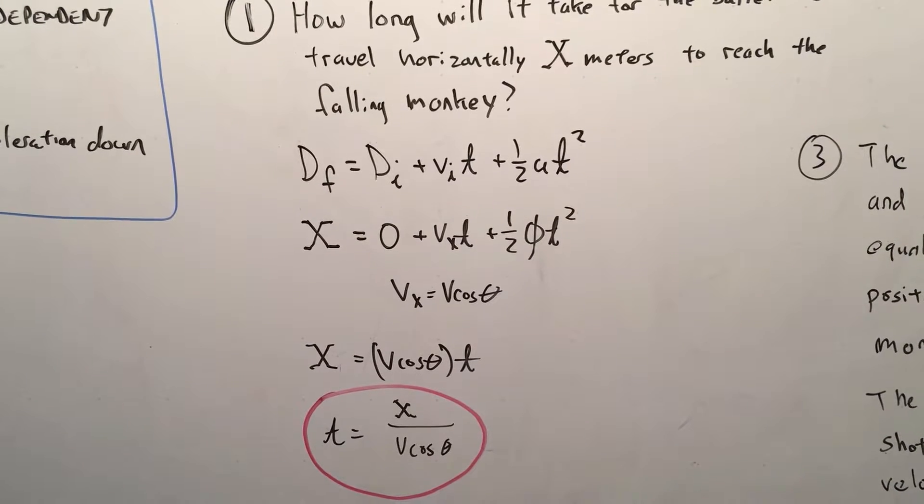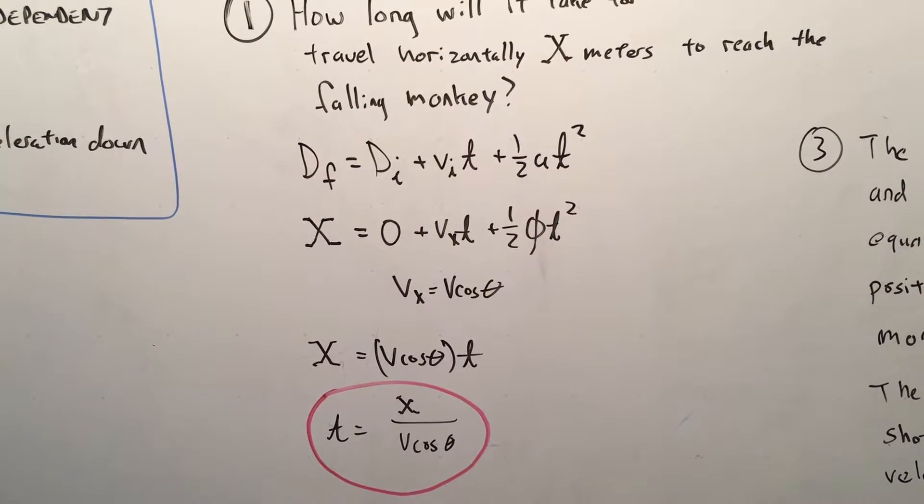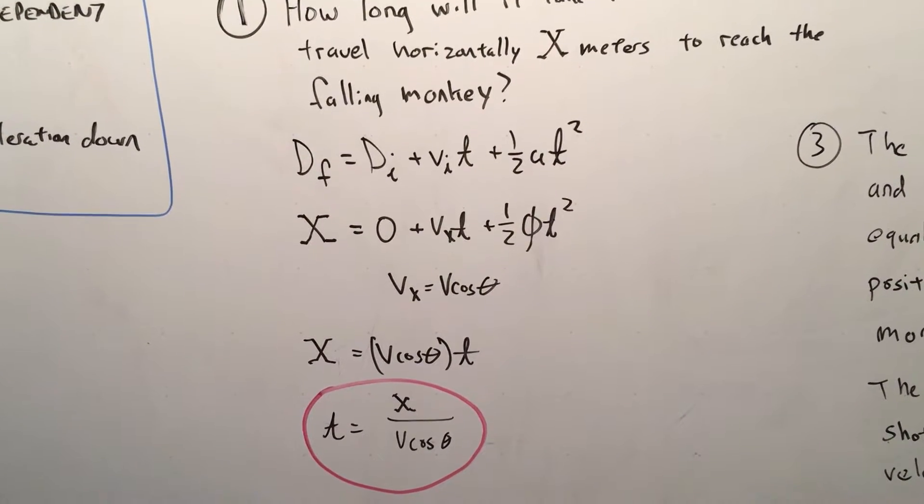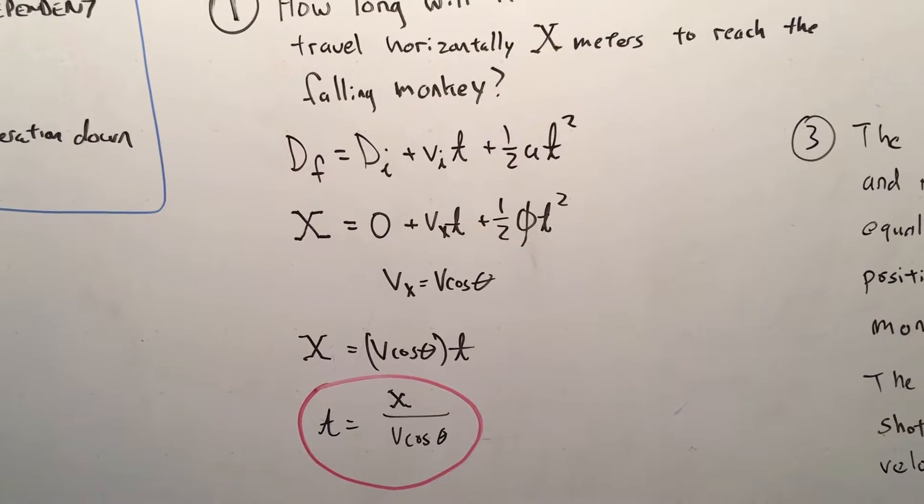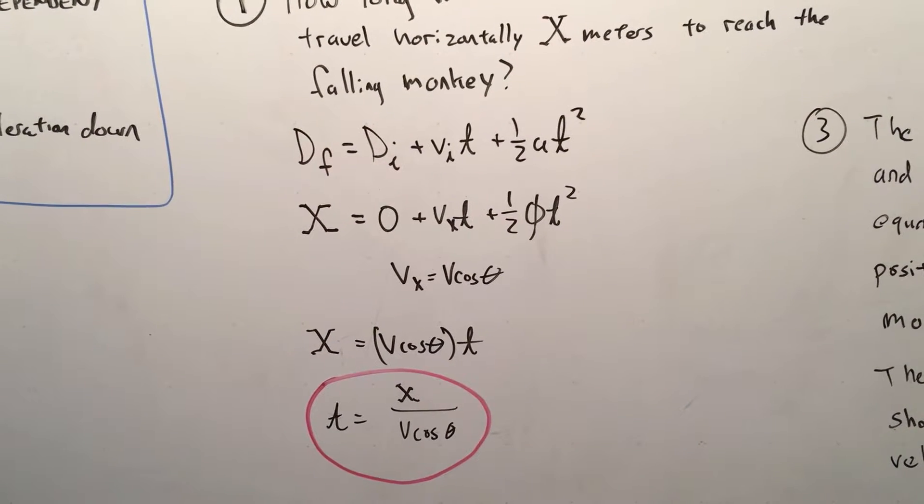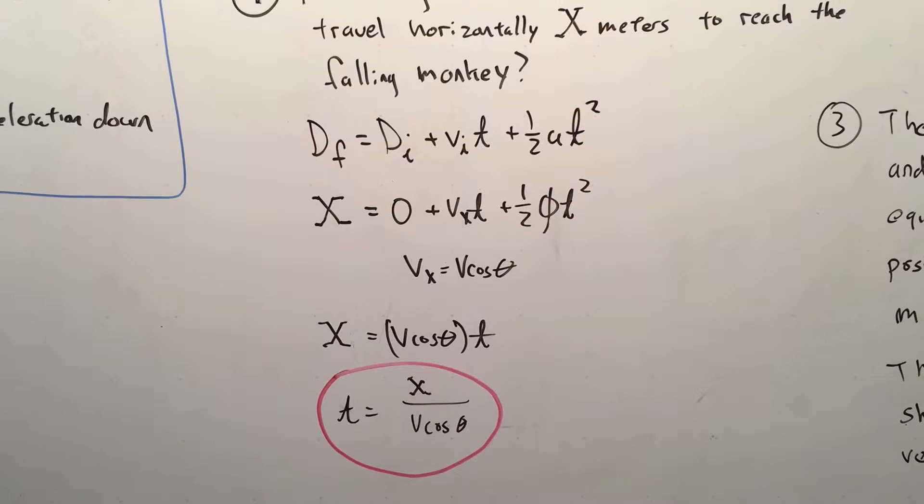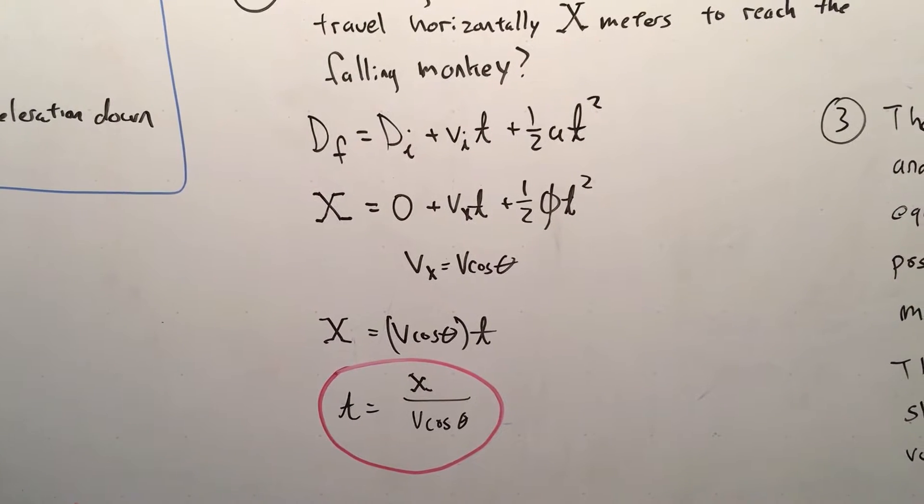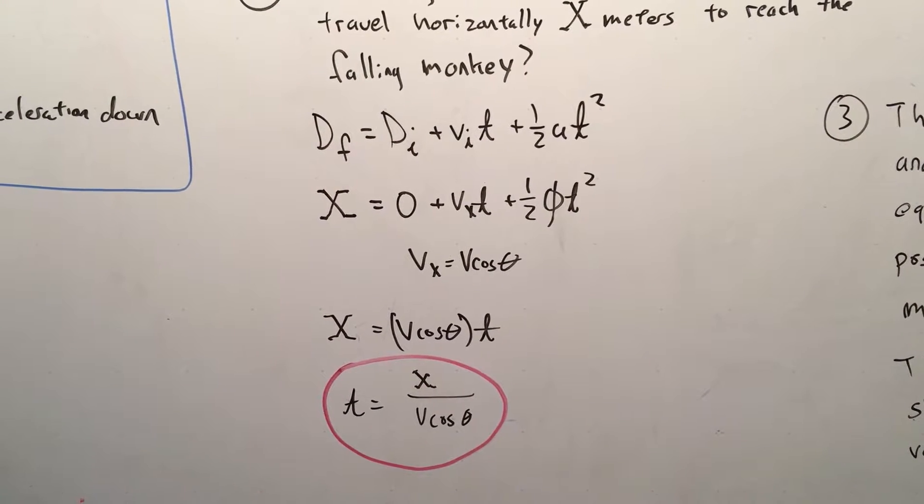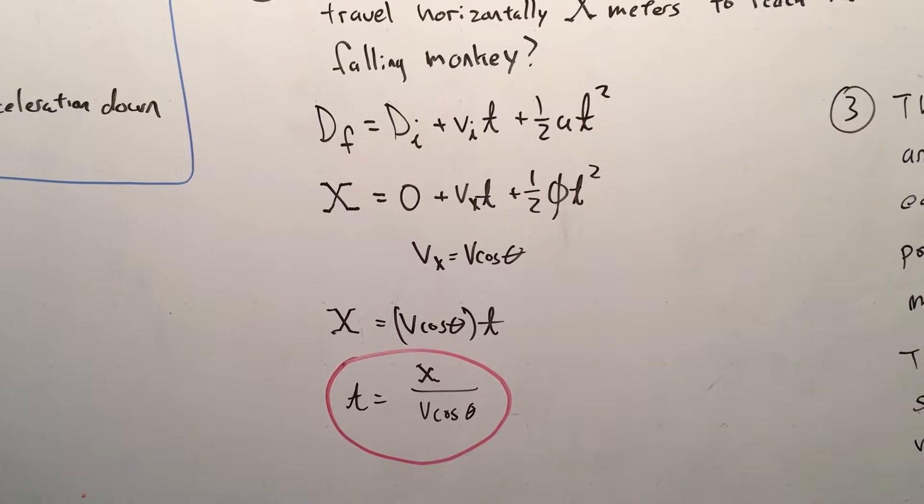Since he starts at the origin, Di is zero. VX is going to be V cosine theta. And since there's no acceleration in the horizontal movement, it simply turns out to be that X equals V cosine theta t.